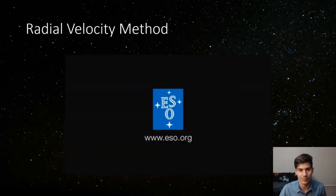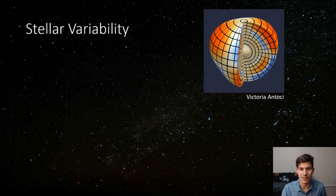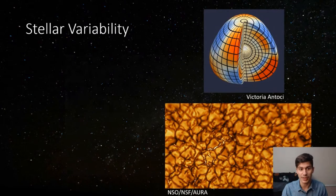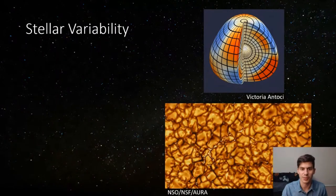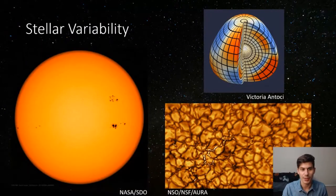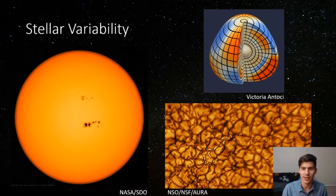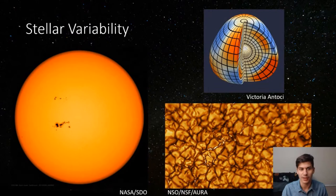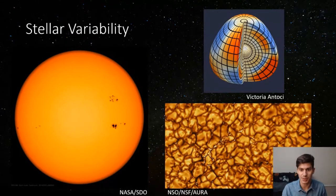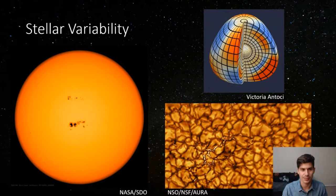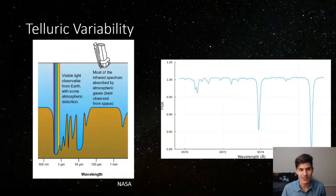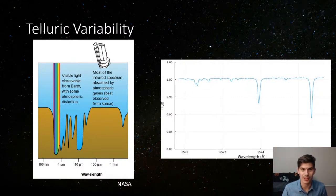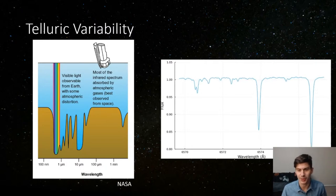Sources of stellar variability include pulsations where the outer layers of stars oscillate based on their internal structure, granulation where convecting cells move gas to and from the surface, and magnetic activity like star spots caused by magnetic field flux inhibiting convection at the surface. All these phenomena cause spectral line asymmetries that show up in radial velocity measurements. There is also spectral variability from molecules in Earth's atmosphere like water and oxygen absorbing and emitting their own light — these are called telluric features.